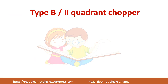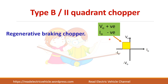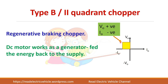So what is a second quadrant chopper? If it operates in the second quadrant, the voltage is positive and the current is negative, so the power will be negative. This is a braking operation, and in this mode the DC motor will work as a generator and feed the energy back to the supply.